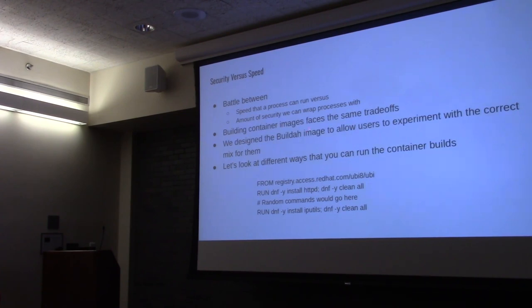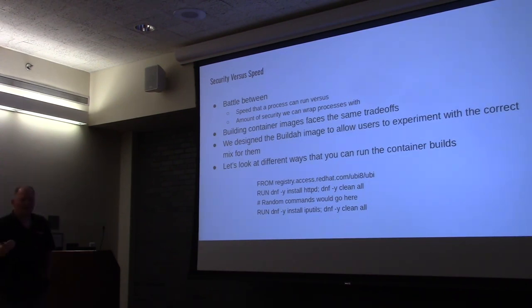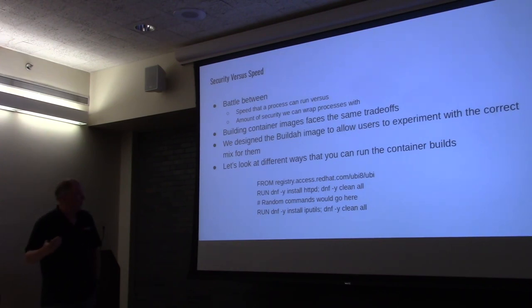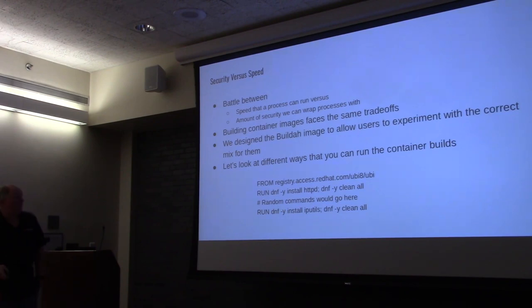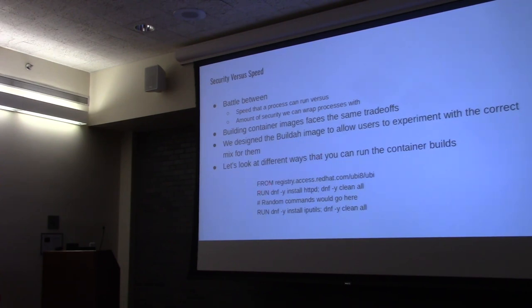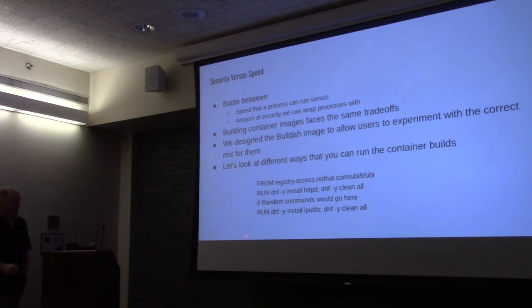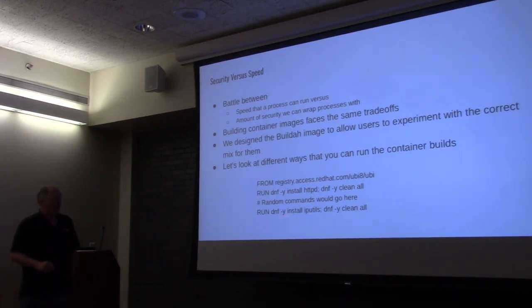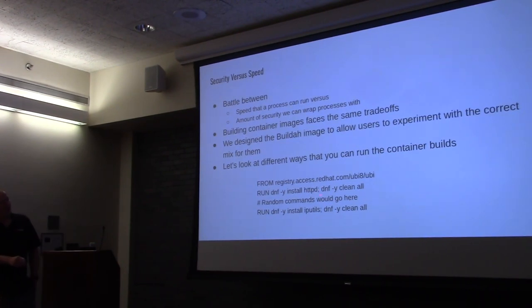Building container images faces the same kind of tradeoffs. We designed Buildah to allow you to experiment with how you want to run containers inside your Kubernetes environment or whatever container engine you use. Let's look at some different ways to build containers. We built a Dockerfile that we're going to run inside containers. This is a traditional way a lot of people build container images — a FROM line, then a couple of lines that install software. This line uses apt, dnf, or yum, telling the build to run a container and install the Apache package, then do a 'dnf -y clean all'.